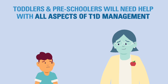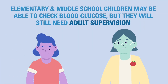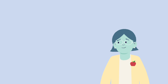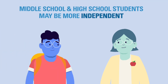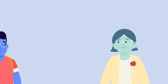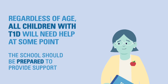Toddlers and preschool-aged children need help with all aspects of diabetes care. Some children in elementary school and middle school may be able to check their blood glucose, but they will need help and supervision from adults to ensure it is being done correctly. Middle school and high school students may feel more comfortable handling diabetes care by themselves depending on their maturity level and abilities, but they might still need assistance, particularly in the event of an emergency.